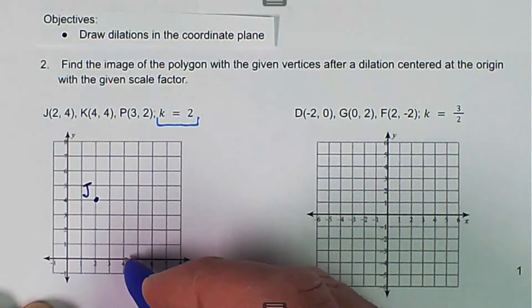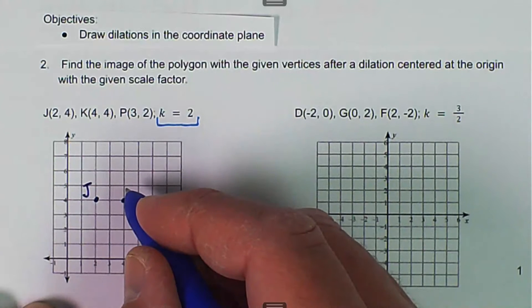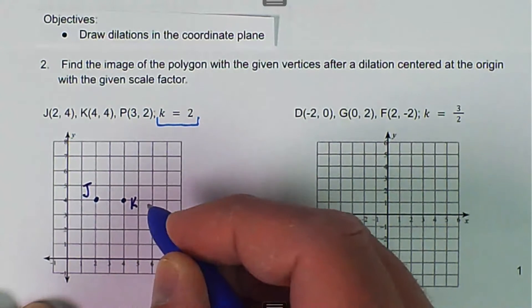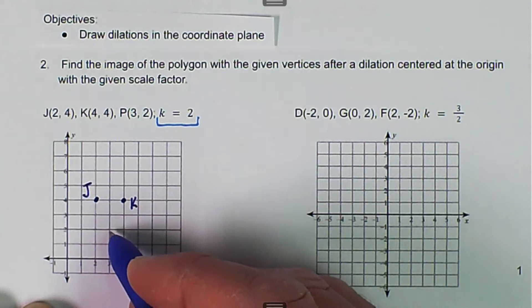And then we have K is 4, 4. And then we have P is 3, 2.